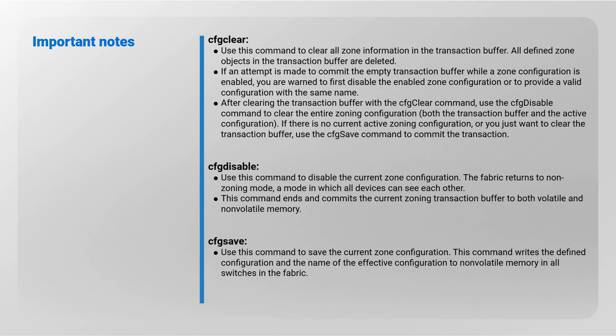If there is no current active zoning configuration, or you just want to clear the transaction buffer, use the cfg save command to commit the transaction. CFG disable: use this command to disable the current zone configuration; the fabric returns to non-zoning mode, a mode in which all devices can see each other. This command ends and commits the current zoning transaction buffer to both volatile and non-volatile memory.